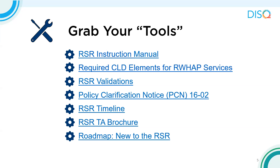Policy Clarification Notice, or PCN 1602, is where you need to look for service category definitions to ensure you're reporting the correct services for your clients — you can find this on the HAB website. The RSR timeline outlines key due dates for this year's submission, and recipients can always set earlier deadlines for their subrecipients. The RSR TA brochure lists all TA providers including the DISC team and data support. And if it's your first RSR, Target HIV has a whole collection of resources designed just for you.